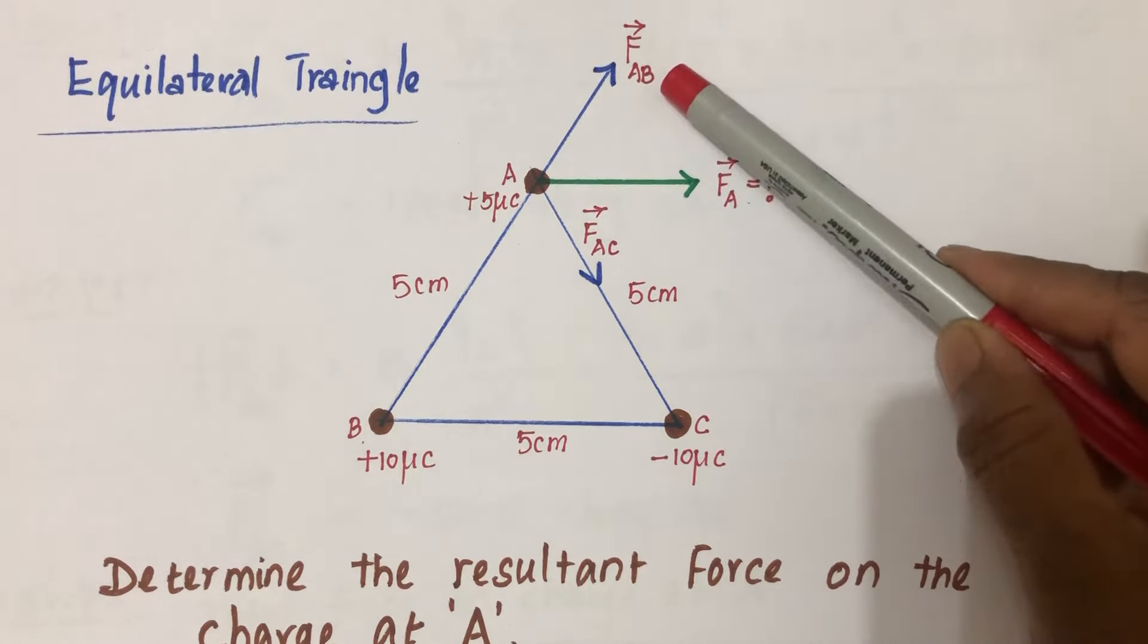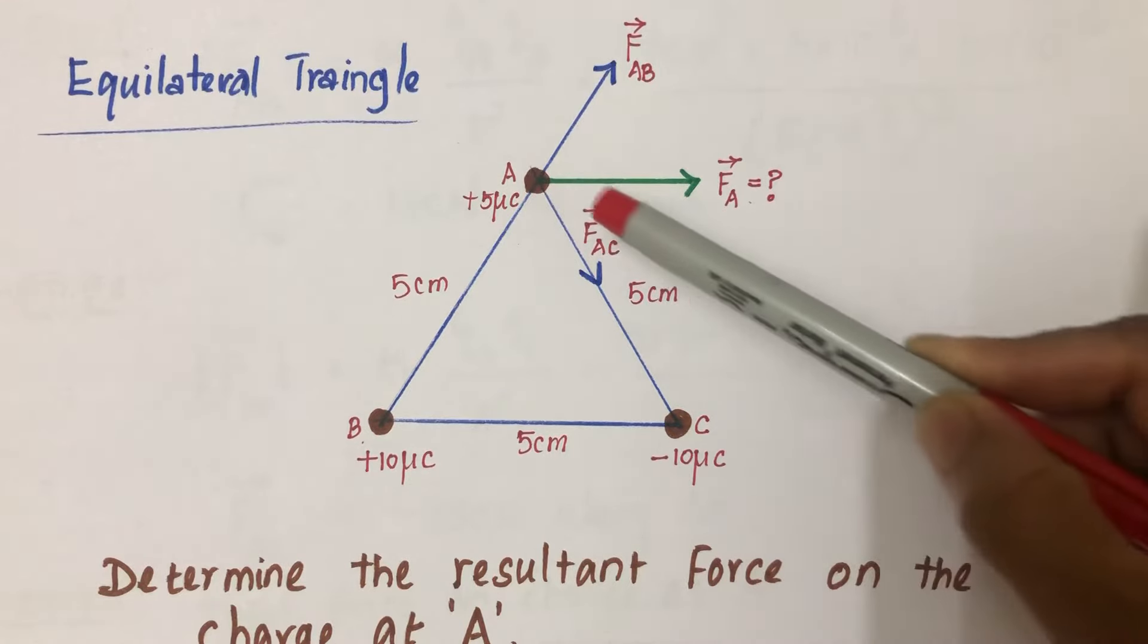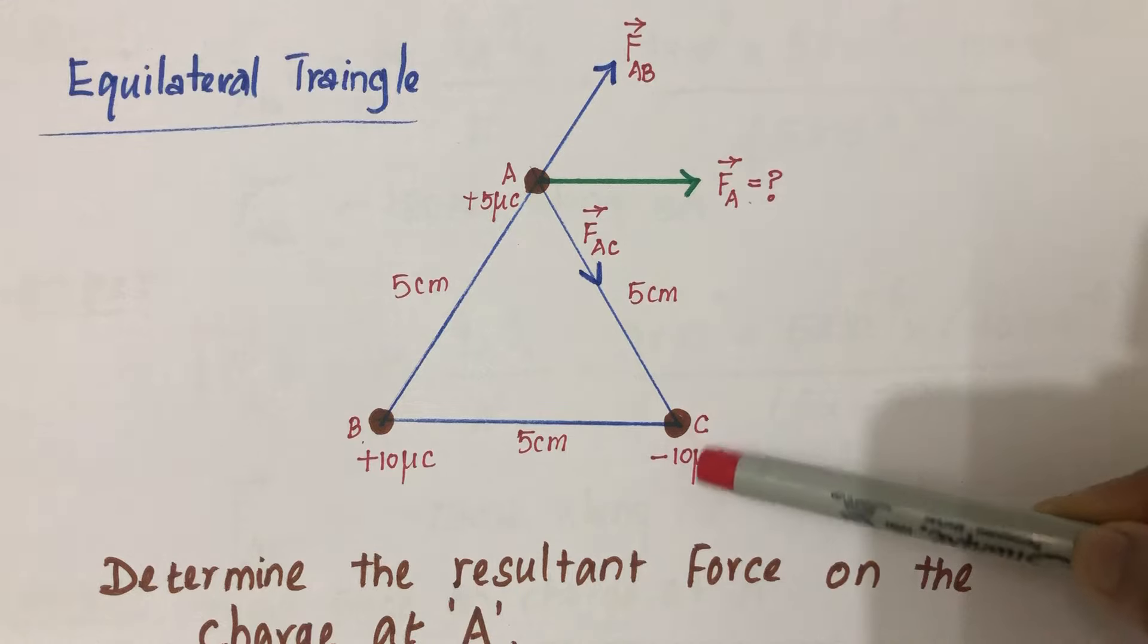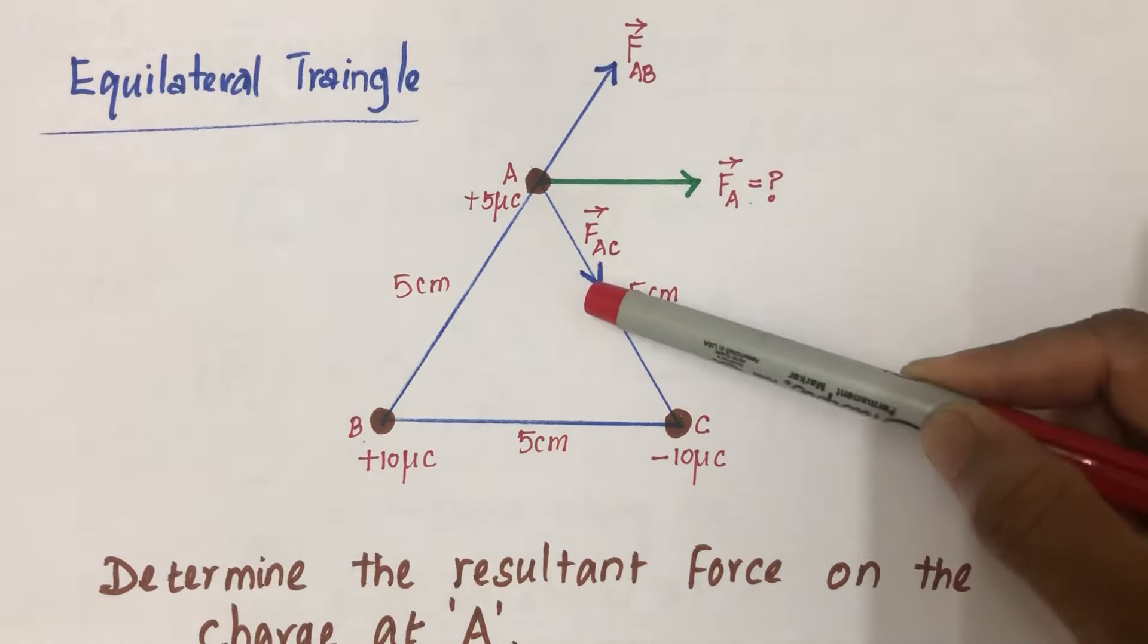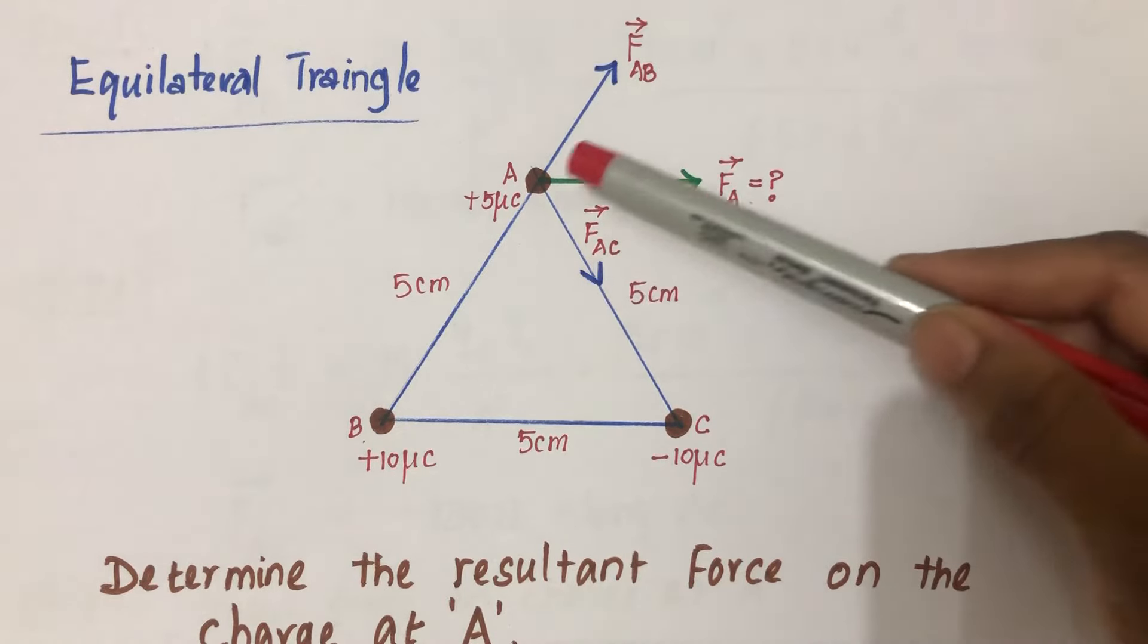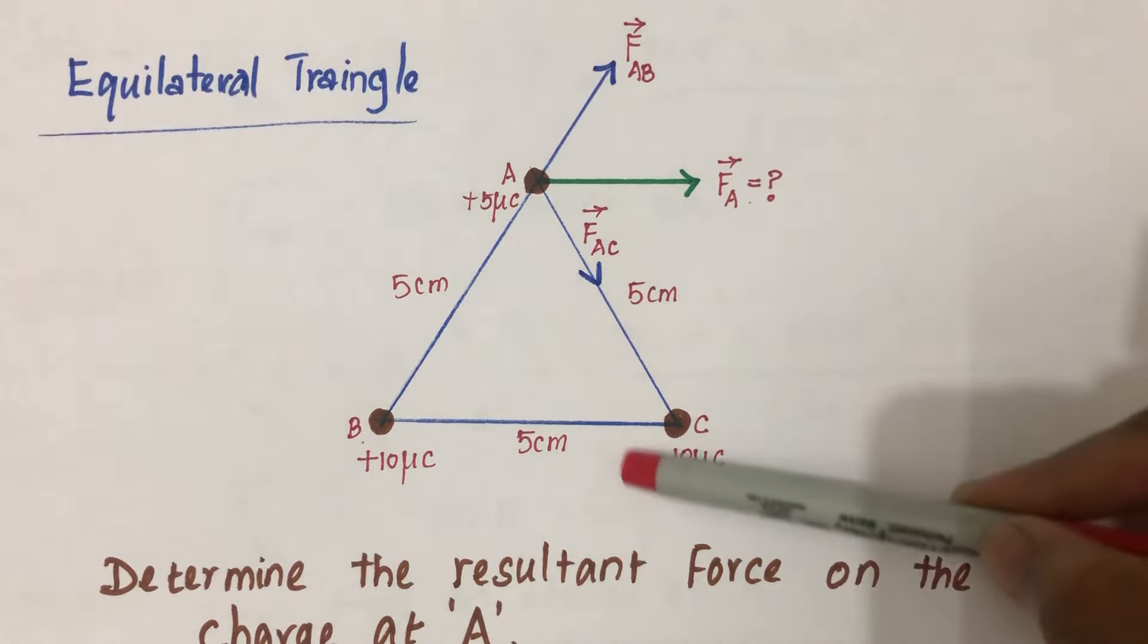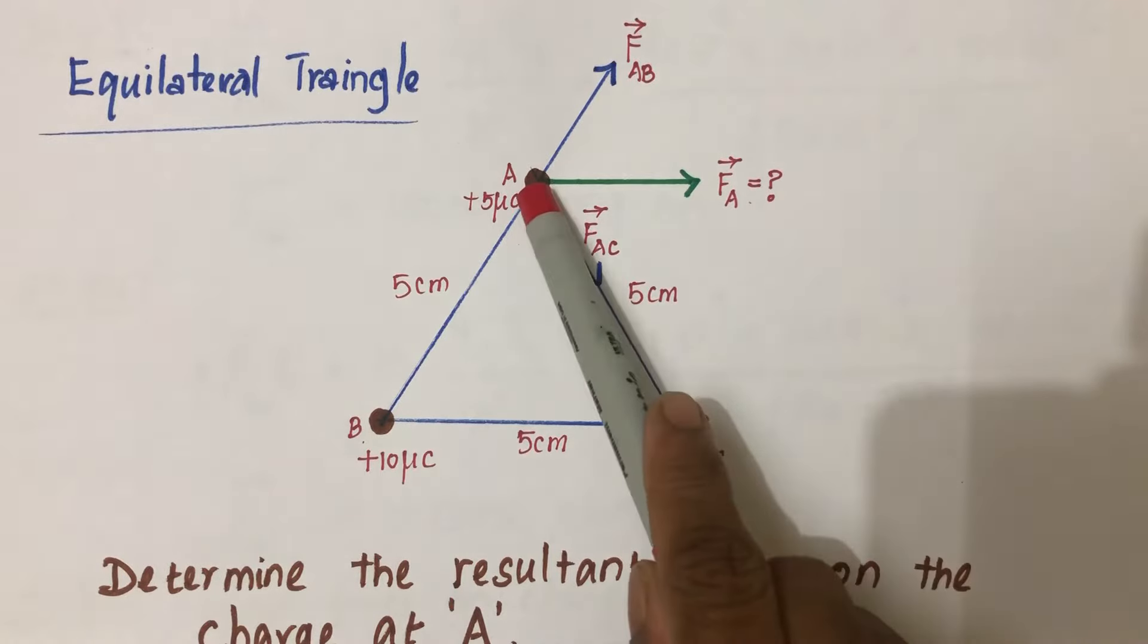Now, this is the force on A due to the negative charge, negative 10 microcoulombs at C. It should be an attractive force, so this charge will attract in this direction. This is the force acting on A due to the negative charge at C. Now we have to find the resultant of these two vectors.